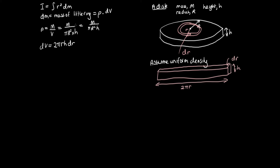Now that we have the volume and density, we can work out dm. Multiplying density by volume: dm = (M / πR²H) × 2πr·H·dr. The π's cancel and the H's cancel. Note that the lowercase r is the distance of the little ring from the pivot, while capital R is the total radius of the disc. This simplifies to dm = 2Mr dr / R².